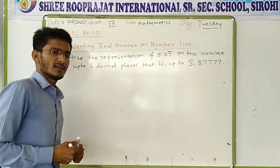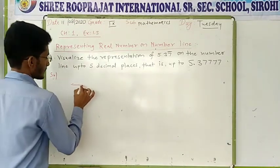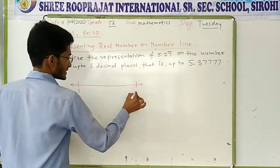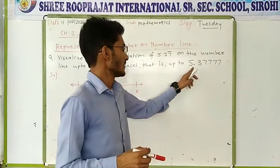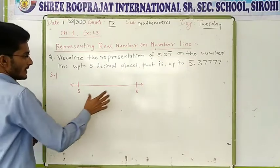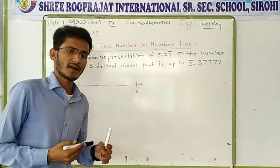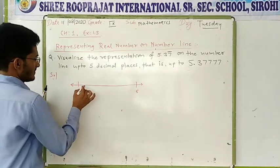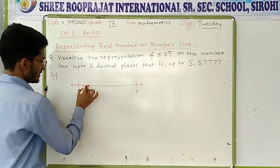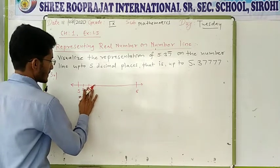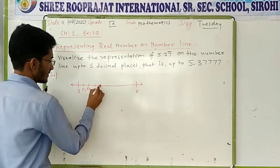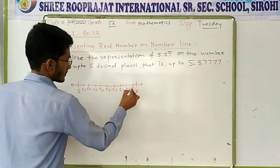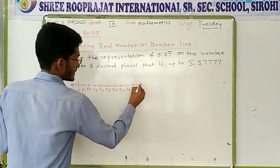So we will draw only a line — in both sides there should be an arrow. Suppose there is 5 and there is 6. Because we know that 5.37777 will be in between 5 and 6. As we know between 2 integers there are 10 equal parts on a number line. So if we divide, suppose there are 10 parts in between 5 and 6. After 5 it will be 5.1, 5.2, 5.3, 5.4, 5.5, 5.6, 5.7, 5.8, 5.9 and that is 6.